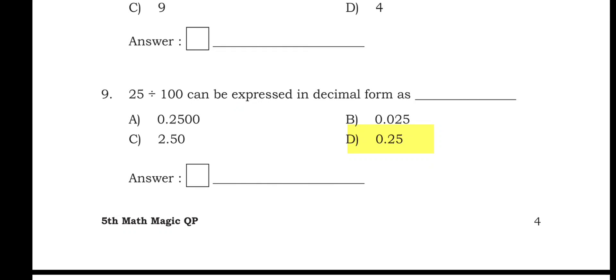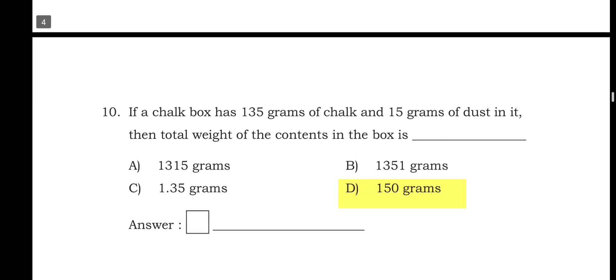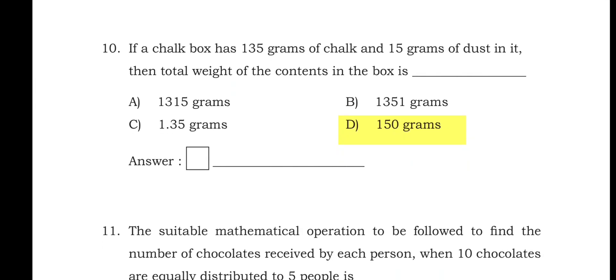Question 9: 25 divided by 100 can be expressed in decimal form as. 25 ÷ 100 = 0.25. Option D is the right answer: 0.25.